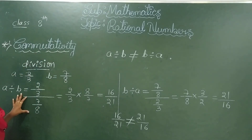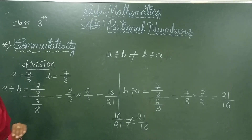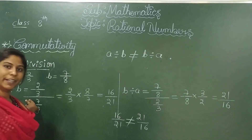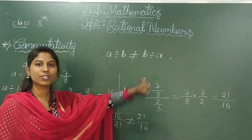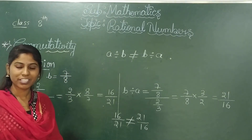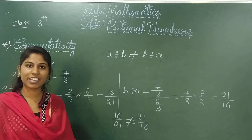To summarize: the commutative property is satisfied for addition (A + B = B + A) and multiplication (A × B = B × A), but is not satisfied for subtraction and division. In the next class, you will learn another property — the associative property for rational numbers. Thank you.